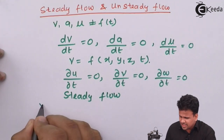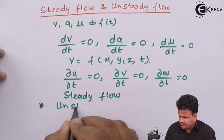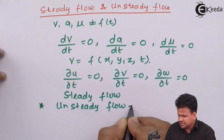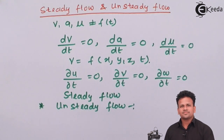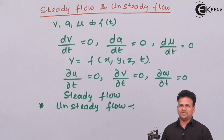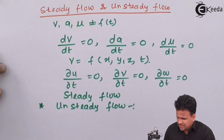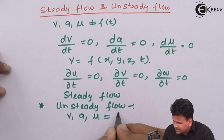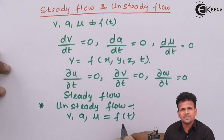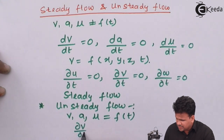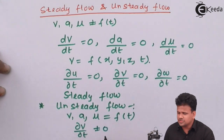Now what is unsteady flow? Unsteady flow is a flow in which all the fluid properties are dependent upon time. That is, velocity, acceleration, and viscosity are a function of time. This means ∂v/∂t ≠ 0.